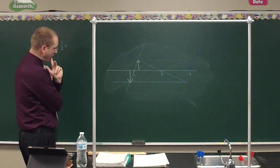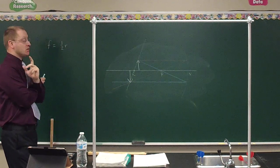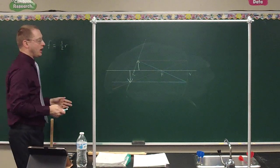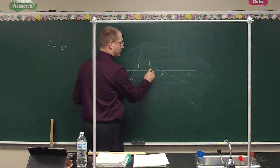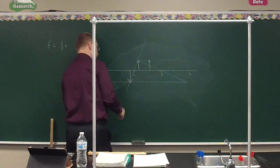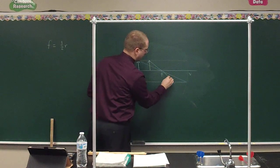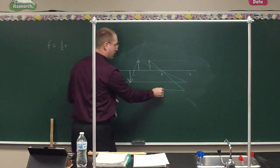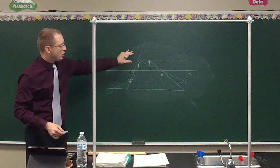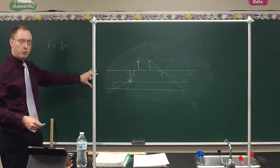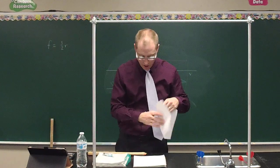What else do we notice? It appears to be further away from the mirror than the object was. And if you pushed it still a little closer, the blue ray would end up hitting the mirror lower and reflecting further. So as the object gets pushed closer, the image continues to get further away. That leads us to cases of image formation.